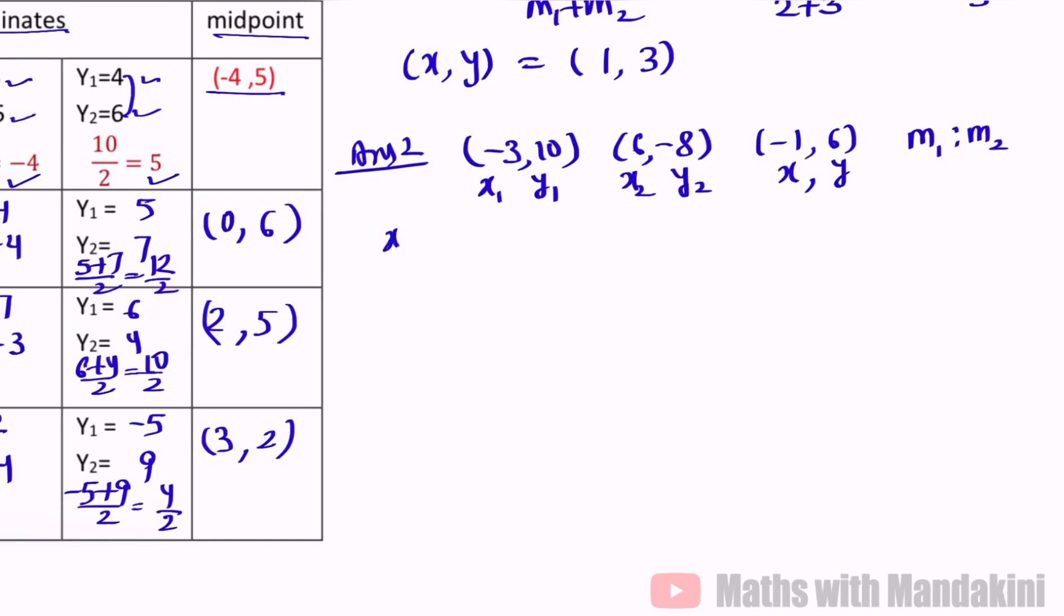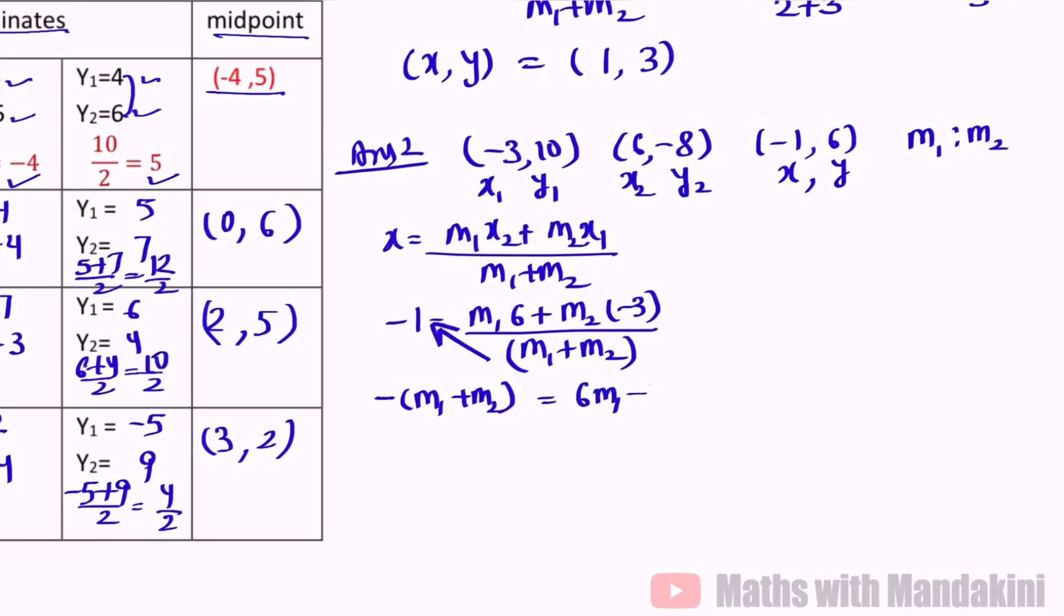Again put values in formula. Our formula is x equals M1x2 plus M2x1 divide by M1 plus M2. Our x is minus 1. Now put values: M1 as it is into 6 plus M2 as it is, x1 is minus 3 upon M1 plus M2. Now what we do is multiply this here. Yaani make linear equation. We get minus M1 plus M2 in bracket is equal to 6M1 minus 3M2. Yaani minus M1 minus M2 equals 6M1 minus 3M2. Now bring M1 to one side. M1 and this 6M1 minus becomes minus 6M1. And M2 we take to the other side, it becomes plus.